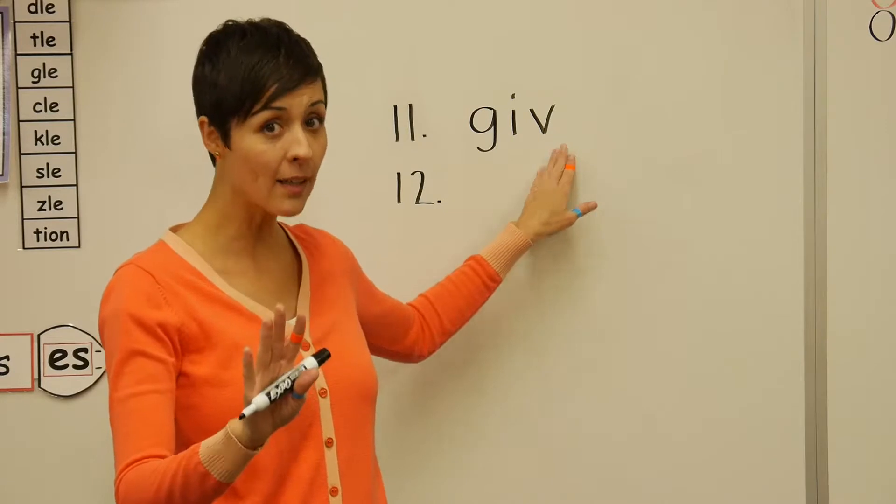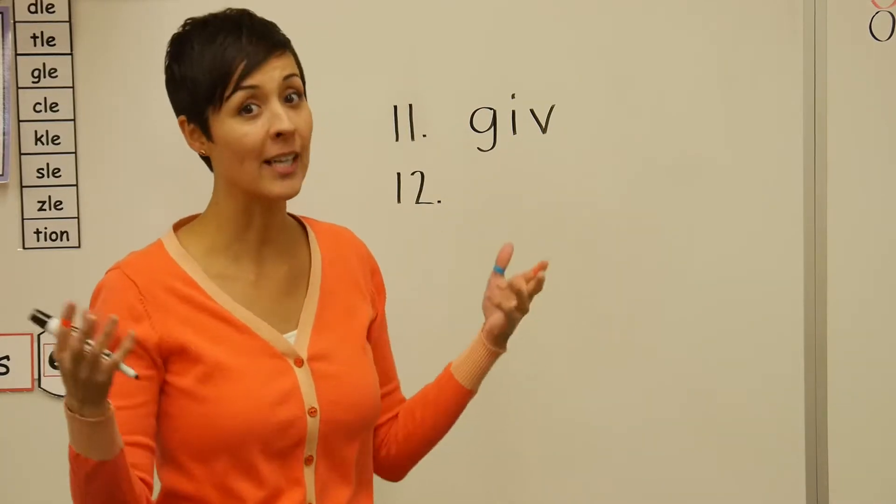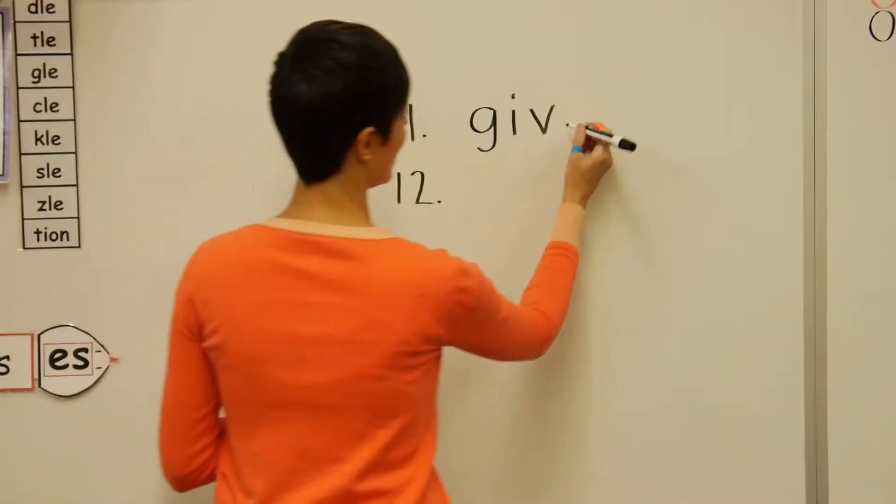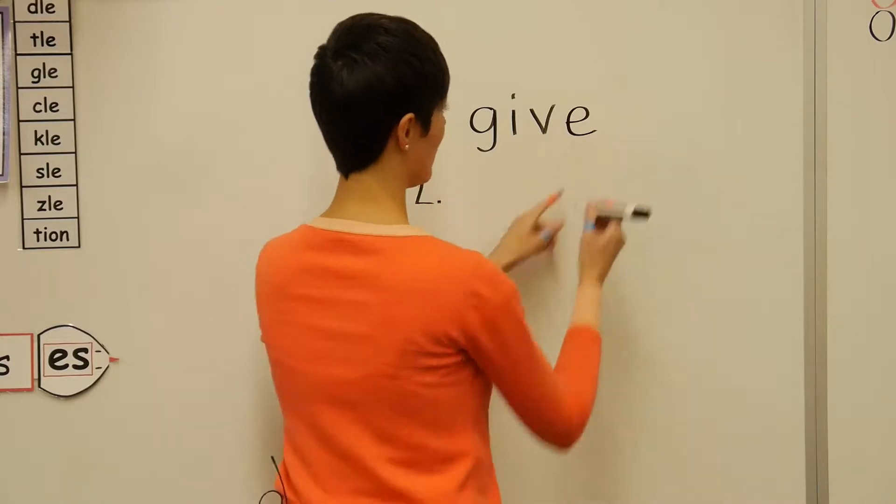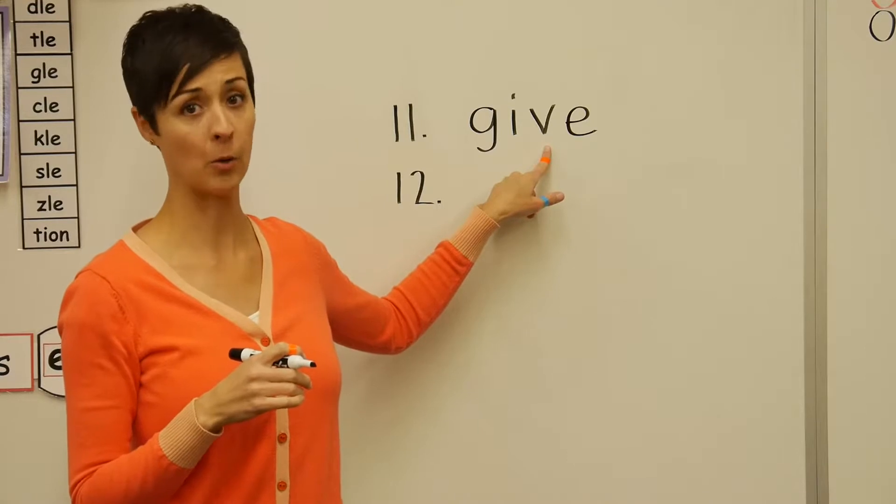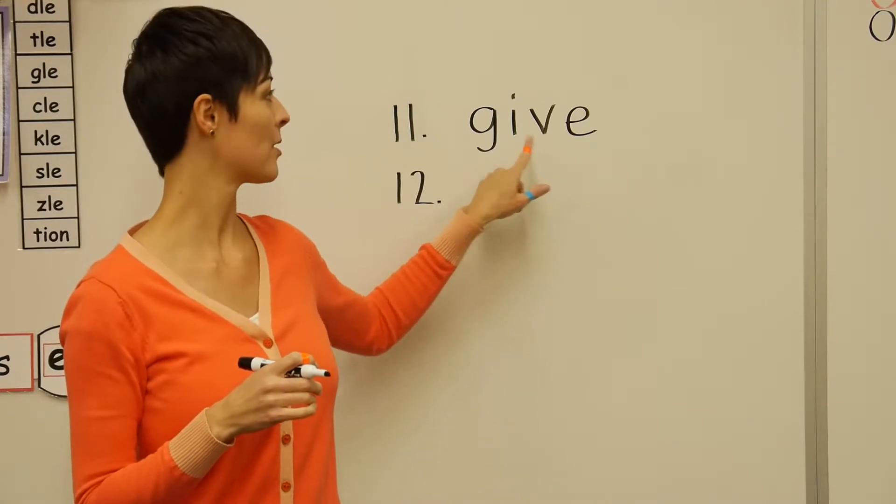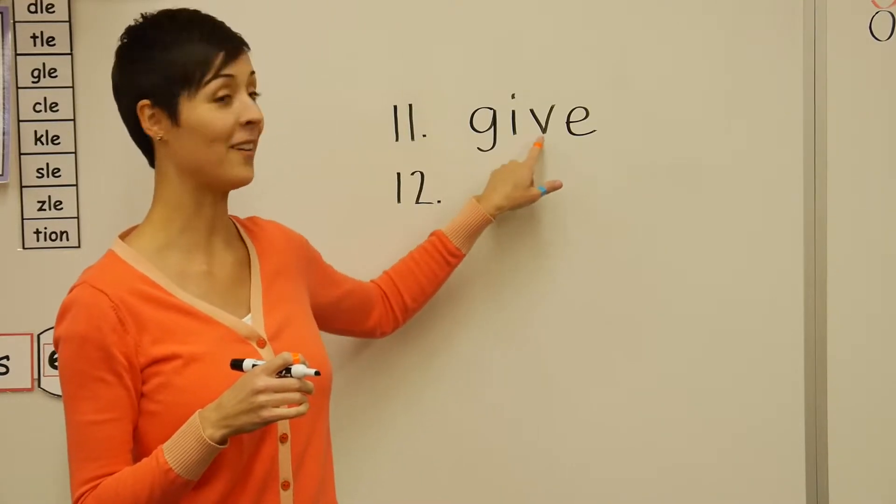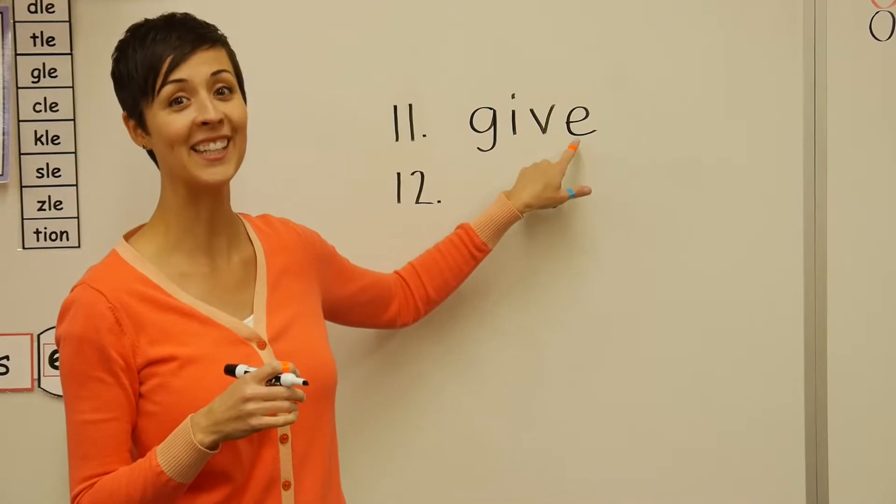So we're going to bring in a friendly little letter E. And E will join the V at the end of the word and keep him company so he doesn't freak out about how lonely and scared he is. So give is G-I-V friendly E.